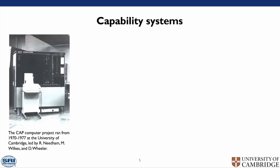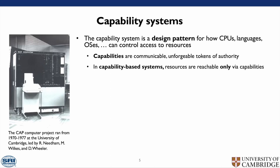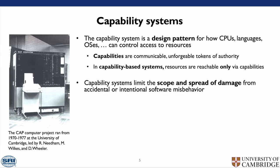What is CHERI? To answer that, first we need to look at what capability systems are. A capability system is a design pattern for how CPUs, languages, operating systems, and more can control access to resources. Capabilities are communicable and forgeable tokens of authority. In capability-based systems, resources are reachable only via capabilities. Capability systems limit the scope and spread of damage from accidental or intentional software misbehaviour.